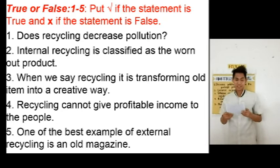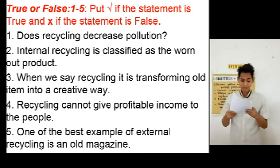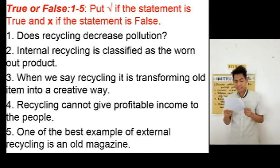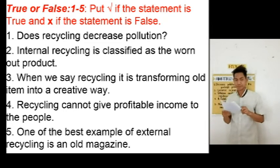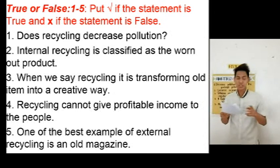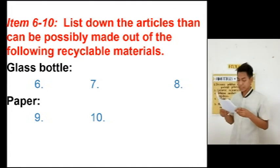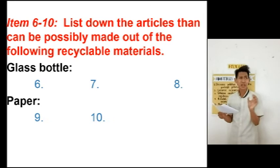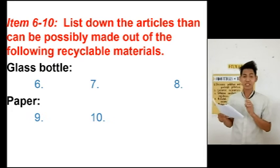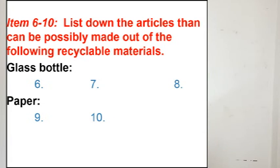Number 4: One of the best examples of external recycling is an old magazine — true or false? For items 6 to 10, list the articles that can possibly be made out of the following recyclable materials. For items 6 to 8, glass bottles — what are the recycling possibilities of glass bottles? For items 9 to 10, paper.